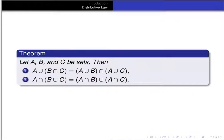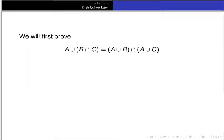We're going to prove this theorem. Let A, B, and C be sets. Then: first, A∪(B∩C) = (A∪B)∩(A∪C); and second, A∩(B∪C) = (A∩B)∪(A∩C). We'll first prove that A∪(B∩C) equals (A∪B)∩(A∪C).